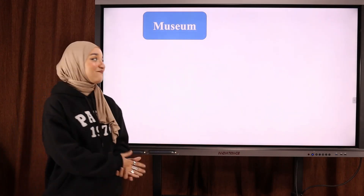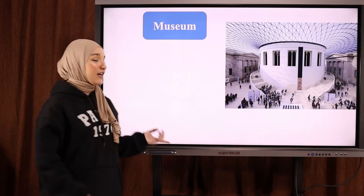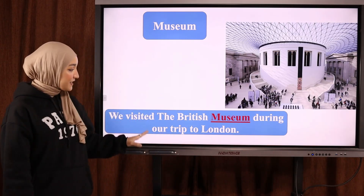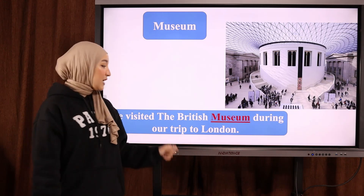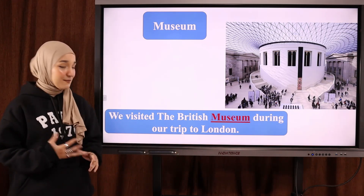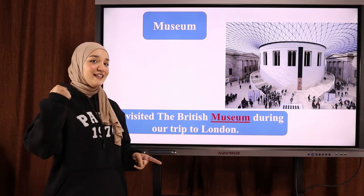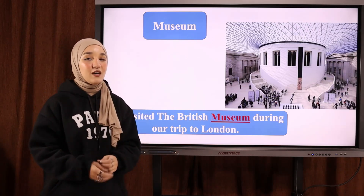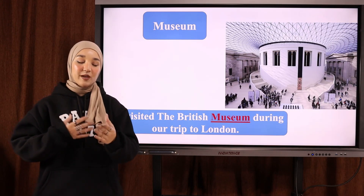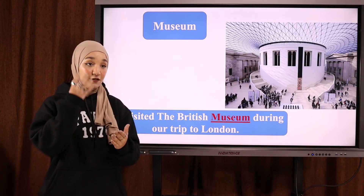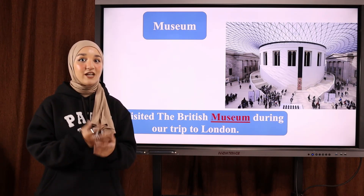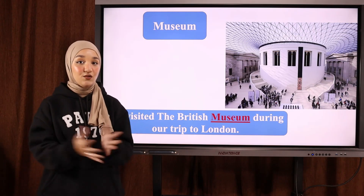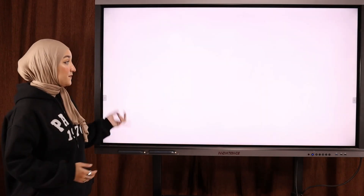The next word is 'museum' — متحف. Note the Z sound: museum. Example: 'We visited the British Museum during our trip to London' — قمنا بزيارة المتحف البريطاني خلال رحلتنا إلى London. A museum is a place, a building, where people can go and see valuable objects (أشياء قيمة) from history (من التاريخ) or science.